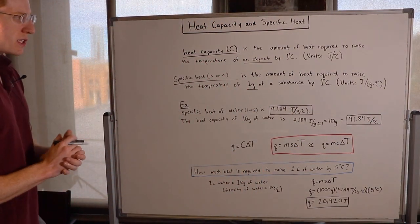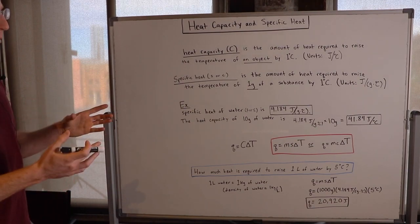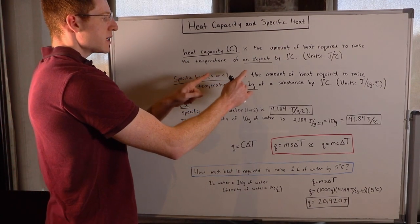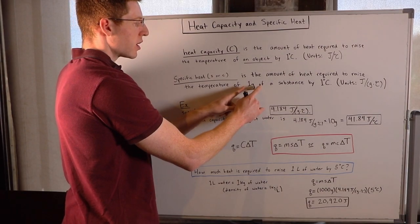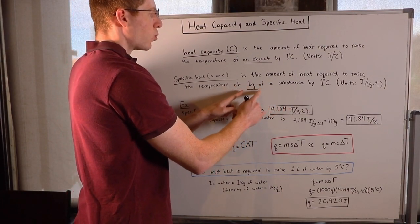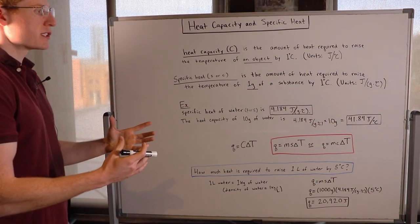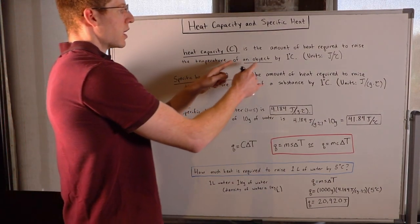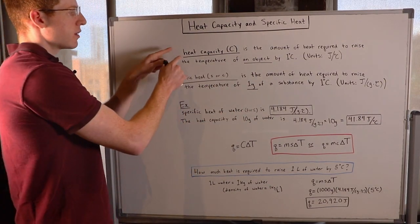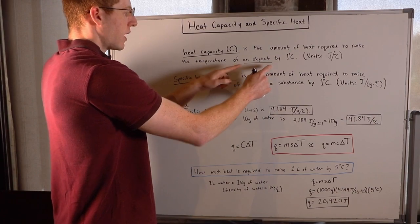Heat capacity and specific heat are very similar, although there's one important difference. Specific heat specifies the particular amount of the substance that you have — it's one gram. Heat capacity leaves it vague; it just says an object. It doesn't tell you the amount of that object. You have to tell heat capacity how much of the object you have.